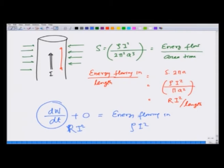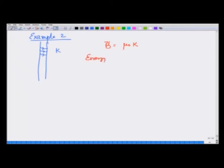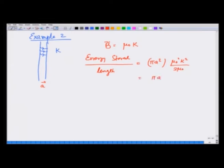As a second demonstration of this concept, let me take a solenoid with surface current k, so that the field inside B = μ₀k. The energy stored per unit length is the cross-section πa² times length 1 times B²/(2μ₀) = πa² × μ₀²k²/(2μ₀), which gives πa²μ₀k²/2 as the stored energy per unit length.